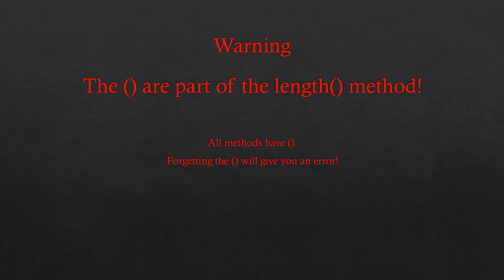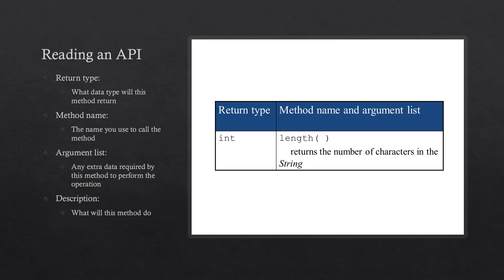If you forget to add parentheses your code will not compile — that's a compilation error. All the information we need about how to use a method is available in the API of that class, or the Application Programming Interface. The API provides all the methods available in that class, information about what data you can store, and how you can construct objects from that class.